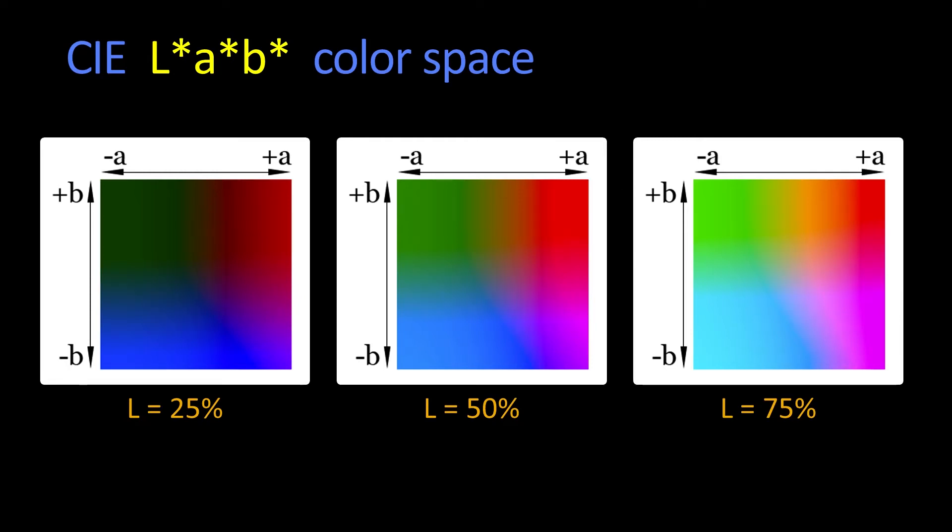There's something called the CIE LAB space, sometimes called lab space, where L is luminance. And then as you change the A and the B, you end up with different colors. I'm going to use the word color now instead of the more technical words later.